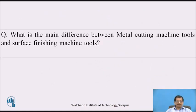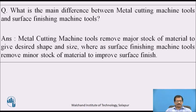Pause the video and answer this question: What is the main difference between metal cutting machine tools and surface finishing machine tools? The answer is: metal cutting machine tools remove major stock of material to give desired shape and size, whereas surface finishing machine tools remove minor stock of material to improve surface finish.